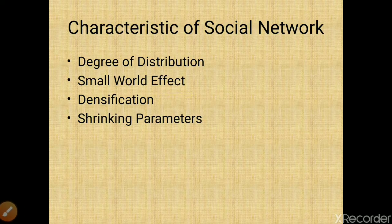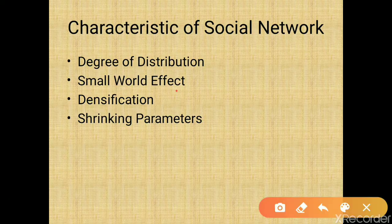The next property is the small world effect. In most real graphs, the number of hops it takes to reach any other node from any given node is about 6 — known as 6 degrees of separation — and this applies to almost all kinds of networks.